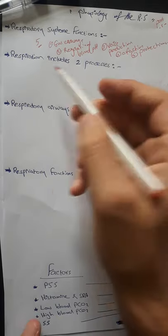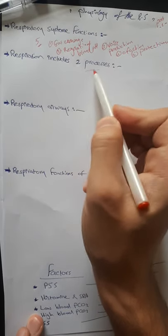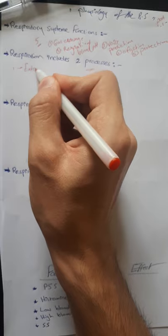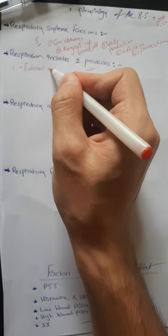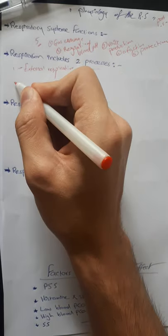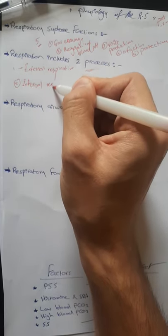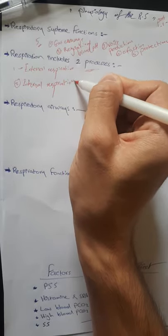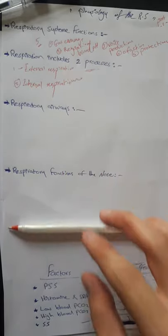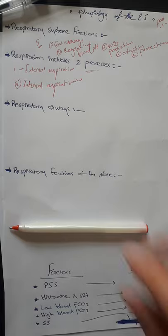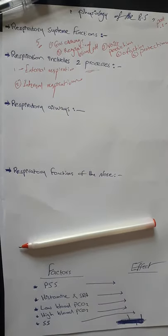Respiration includes two processes. The first is external respiration — the uptake of oxygen (O2) and removal of CO2 (carbon dioxide) between the lungs and the environment. The second is internal respiration — the uptake of O2 and removal of CO2 between cells and their fluid medium.